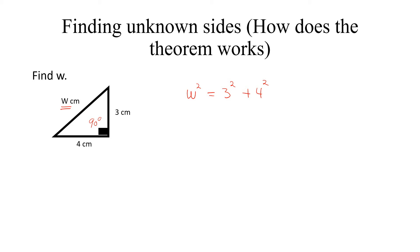Not always will we be finding the hypotenuse — sometimes we could be asked to find one of the other sides, as we will see in coming examples. What is critical is to be able to state the formula carefully. Generally, a squared equals b squared plus c squared. The most important thing is identifying your a, which is always the hypotenuse, whether it is given or not.